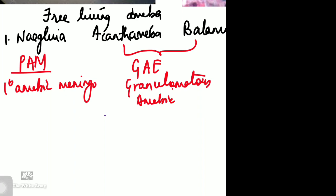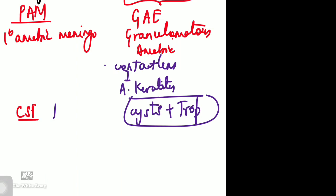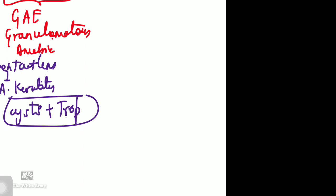Acanthamoeba is also associated with contact lens wearers and can cause Acanthamoeba keratitis. In CSF, Acanthamoeba and Balamuthia show both cysts and trophozoites, whereas Naegleria shows only trophozoites — cysts are not seen in CSF. This is a very important difference.